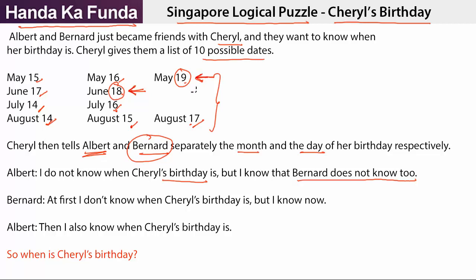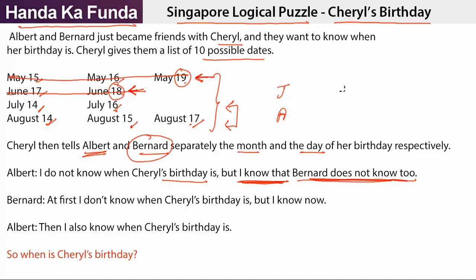The only way Albert can know that is if the answer is July or August. Because if Cheryl had said May, he couldn't have known it's not May 19. If Cheryl had said June, he couldn't have known it's not June 18. The only way he can be sure that Bernard doesn't know is because Cheryl said either July or August. Which means we are now down to 5 possible dates — July or August — and Bernard has heard 14, 15, 16, or 17. He could not have heard 18 or 19.